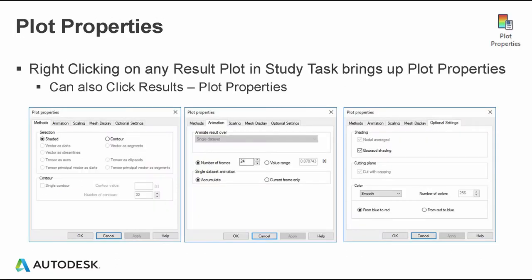Anytime you're in Moldflow Insight you can right-click on the plot or go to plot properties from the environment toolbar. You'll see a list of plot properties you can alter for each plot — things like shaded and contour, animation scaling, display, as well as color segments: smooth, banded, single color. Just personal preference, but we're going to be using this space when we go through these different customization techniques.